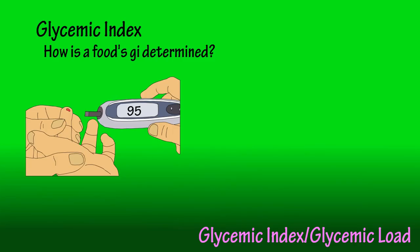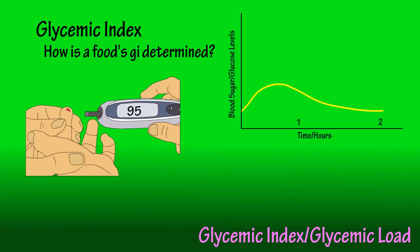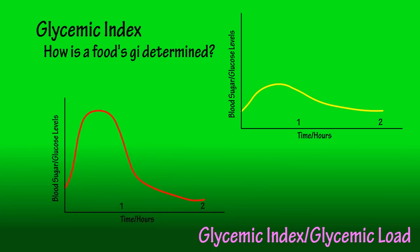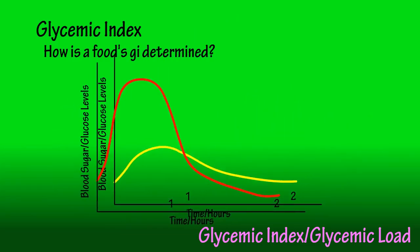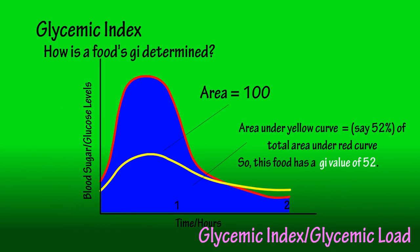These results are plotted on a graph. Next, the people are given 50 grams of carbohydrates of a reference food — either white bread or pure glucose. The same process is followed and these results are plotted. The area under the curve for the reference food is given a value of 100, and the area under the curve of the test food is then calculated as a percentage of that reference food area. Whatever that percentage is, is its glycemic index value.